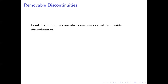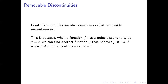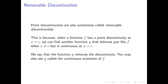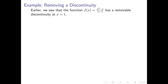Point discontinuities are also called removable discontinuities. When a function f has a point discontinuity at x equals c, we can find another function g that removes the discontinuity. The function g behaves just like f as long as x is not equal to c, but is continuous at x equals c. We call g the continuous extension of f. Going back to our example, the function x squared minus 1 over x minus 1 has a removable discontinuity at x equals 1, where the open circle in the graph is at the point (1, 2).